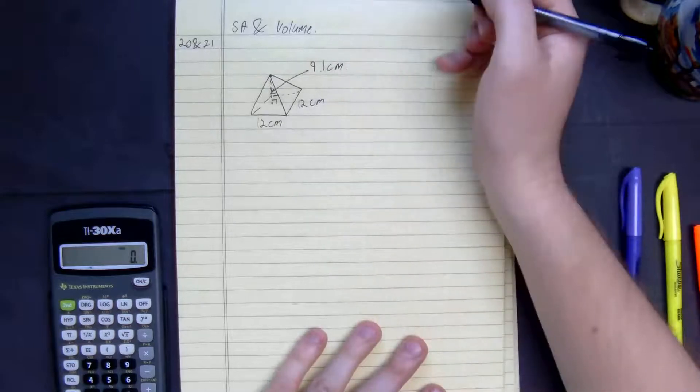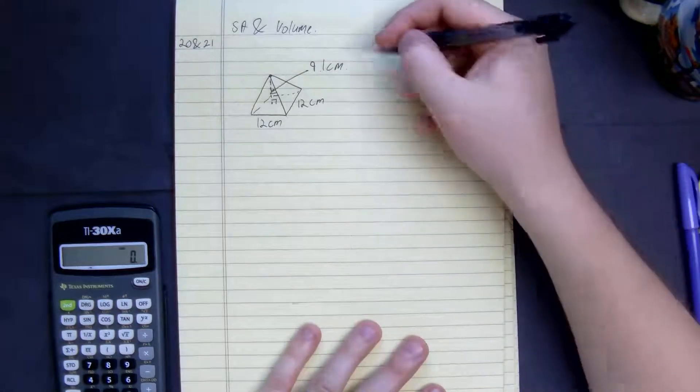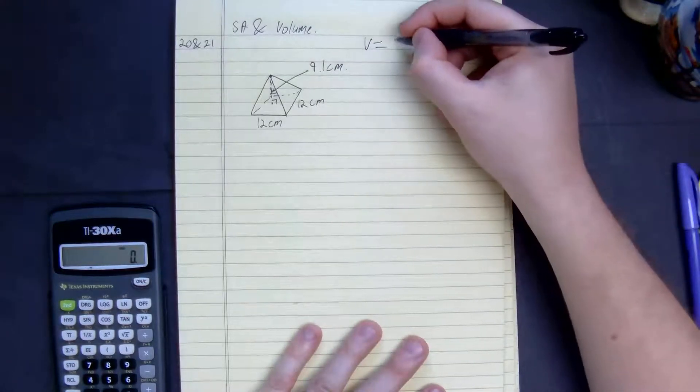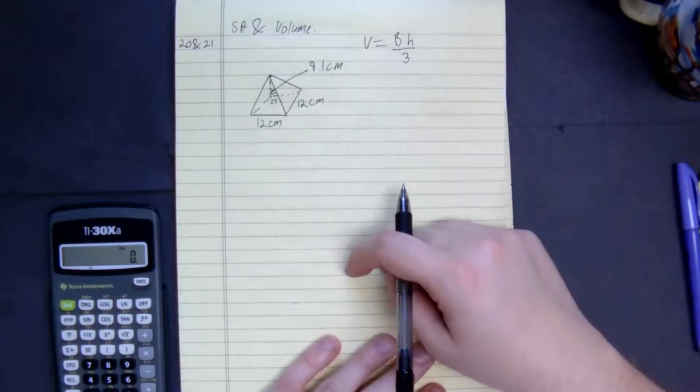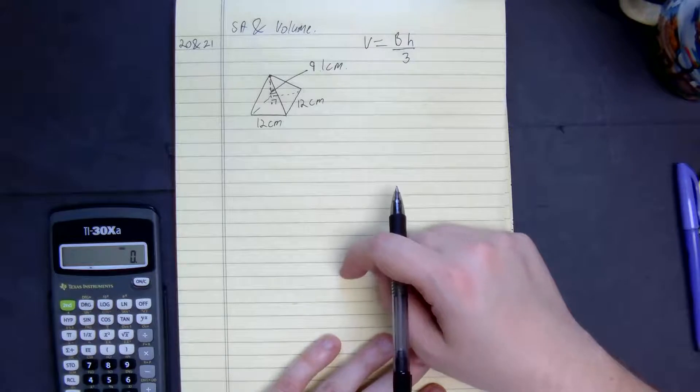Like I always say, volume is the easiest, or to me it is. Volume is equal to base times height divided by 3. It's just like a prism except it's a third the size.